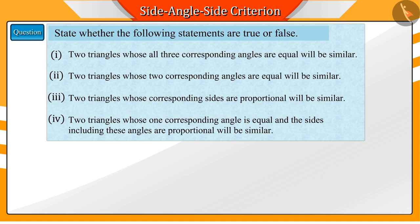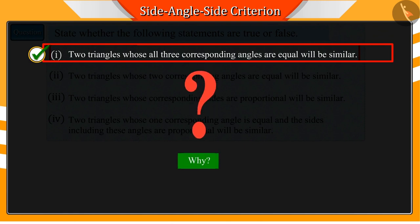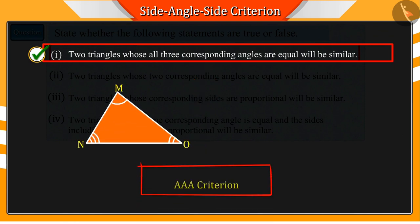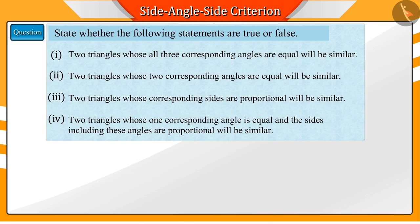What can you say about the first statement? The first statement is correct. Can you tell why? According to the AAA criteria, any two triangles whose corresponding angles are equal are similar to each other. Very good.